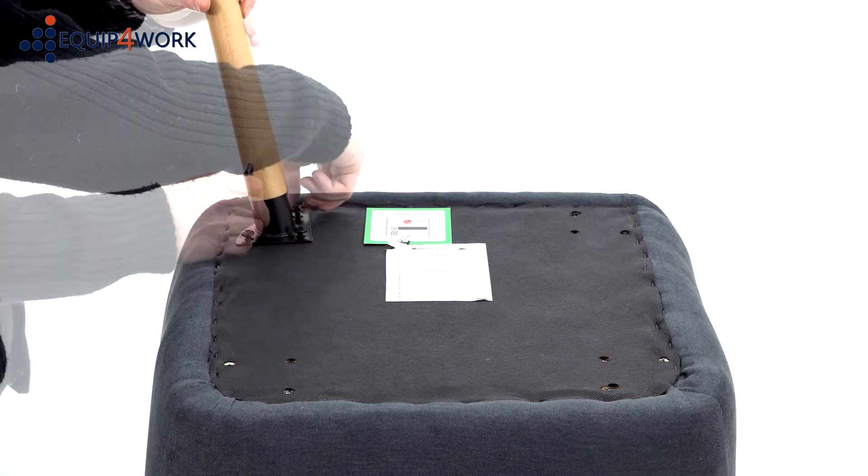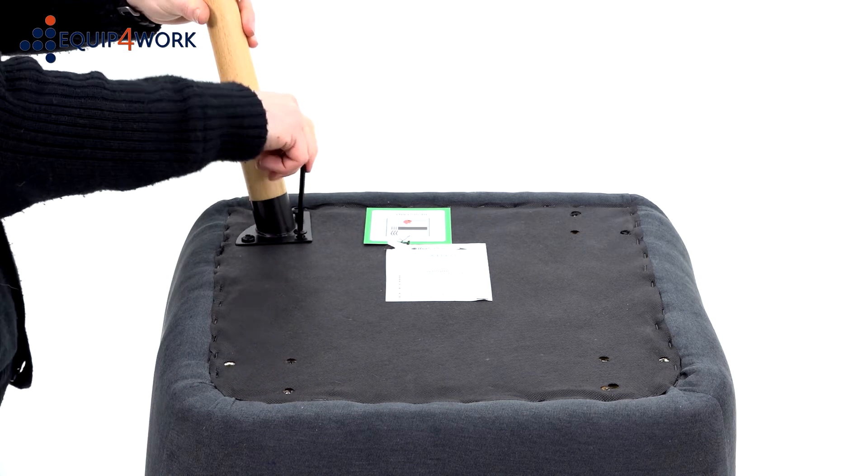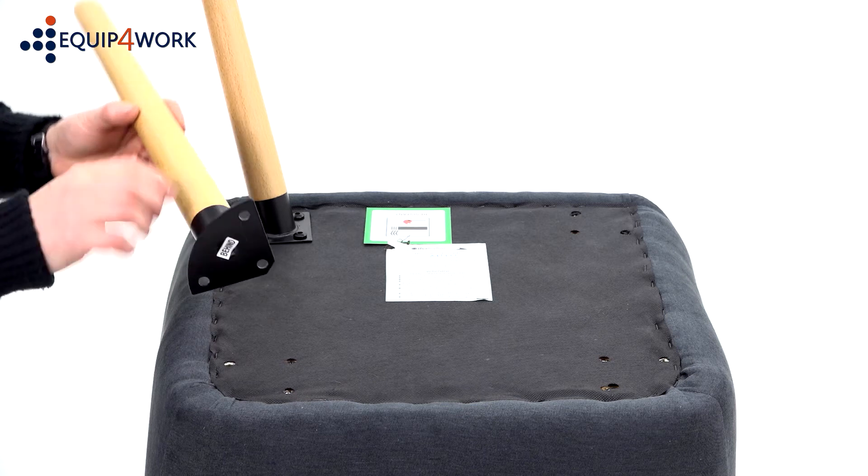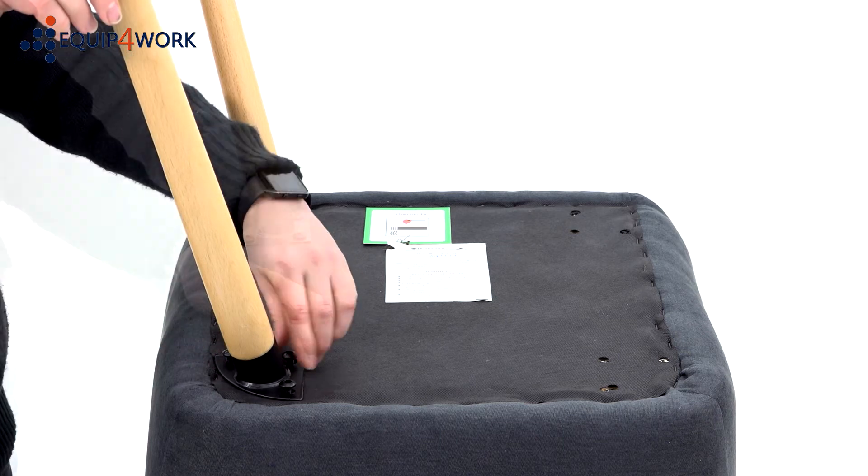The legs feature a fixing plate with three holes. Place bolts in each of the holes, but do not fully tighten these bolts until they're all inserted. We recommend you use the allen key provided and not an electric screwdriver, as this can strip the threads.